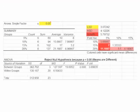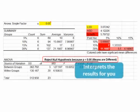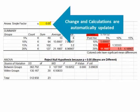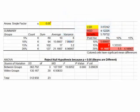QI Macros is the only statistical software that interprets the results for you. It will tell you if you should reject the null hypothesis or if you cannot reject it, and why. You can also change the significance level to determine its impact on the calculations and results.